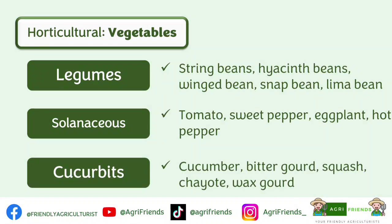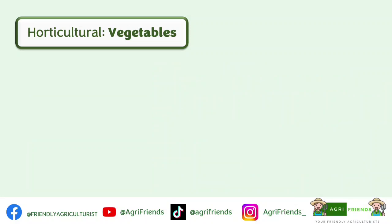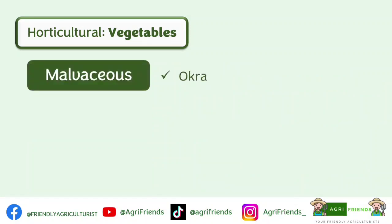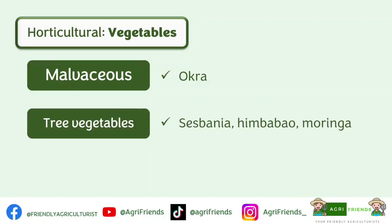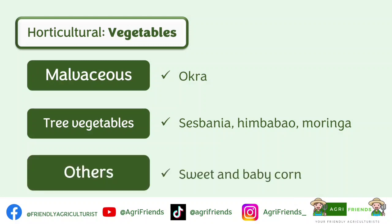Cucurbits, or the squash family, include cucumber, bitter gourd, squash, chayote, and wax gourd. We also have the malvaceous family — okra — and tree vegetables such as sisbanya, himbabao, and moringa (or the horseradish tree). Other vegetables include sweet corn and baby corn.